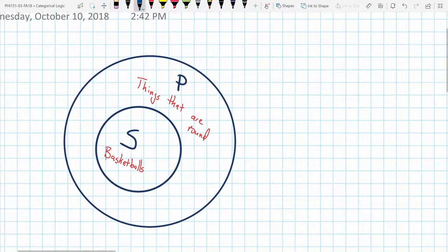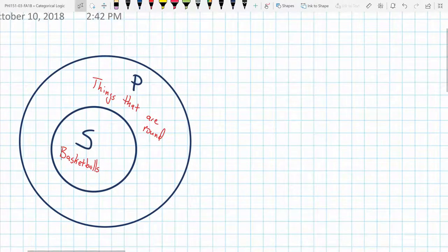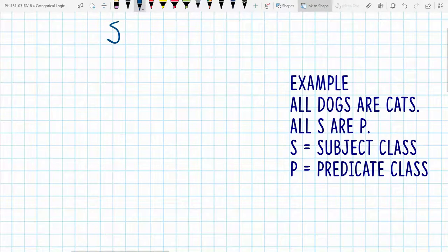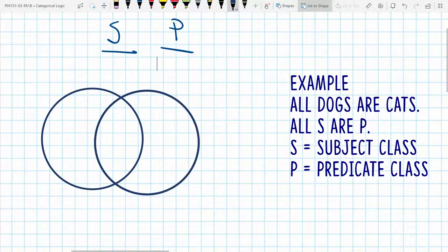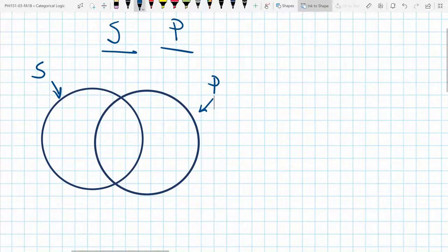And so the thing that Venn did is he said, let's have these partially overlap and then not talk about the entire region, but we'll only talk about specific regions. Here's our first set, and you know in a categorical statement, we have two sets, S and then P, the subject class and the predicate class. So in Venn diagrams, we have the set of things S represented by a circle, and then the set of things P represented by another circle.